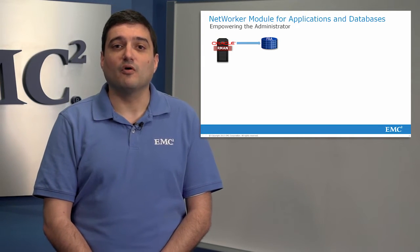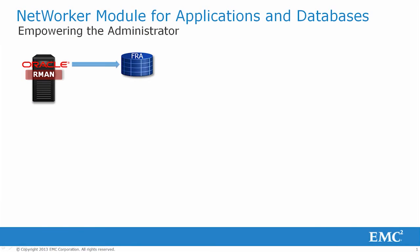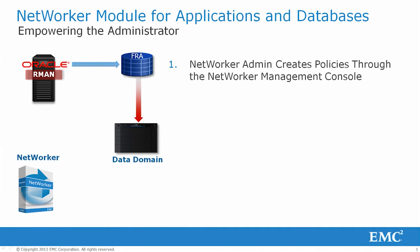The DBA has full control over the backup and the recovery of the Oracle database through RMAN. I'll now walk you through how Networker brings value to both the DBA as well as the Networker administrator. With Networker installed, the RMAN administrator maintains the same control and does not have to modify a single backup or recovery script. The Networker admin takes responsibility for ensuring that the data on the FRA is backed up and adheres to important business policies.